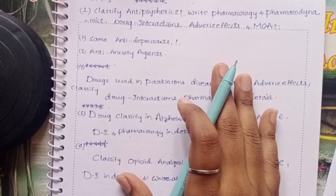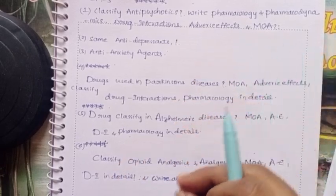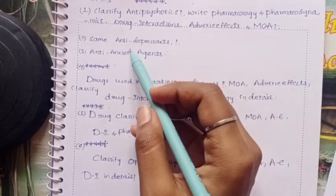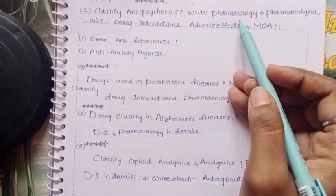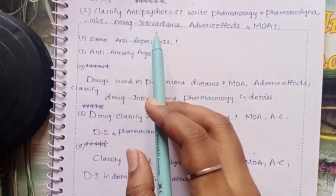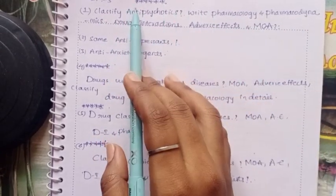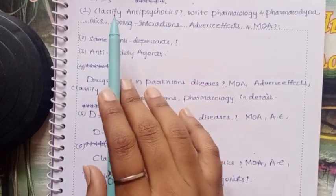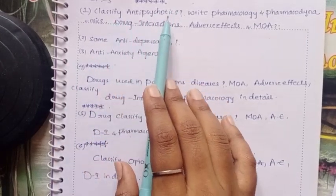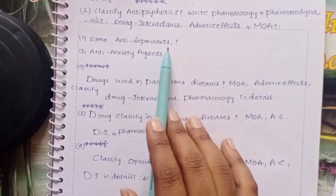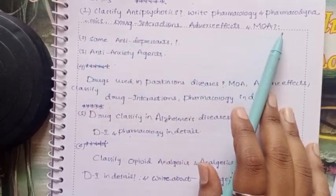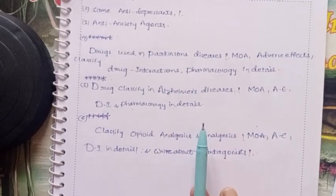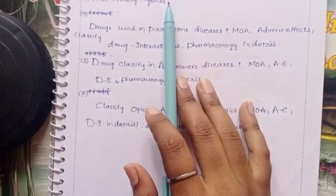Unit 5 is very important, and the questions are out of 10 marks. Classify antipsychotics — their pharmacology, pharmacodynamics, drug interactions, adverse effects, and mechanism of action. This question is very important. Similarly, antidepressants and anti-anxiety drugs are also key topics.